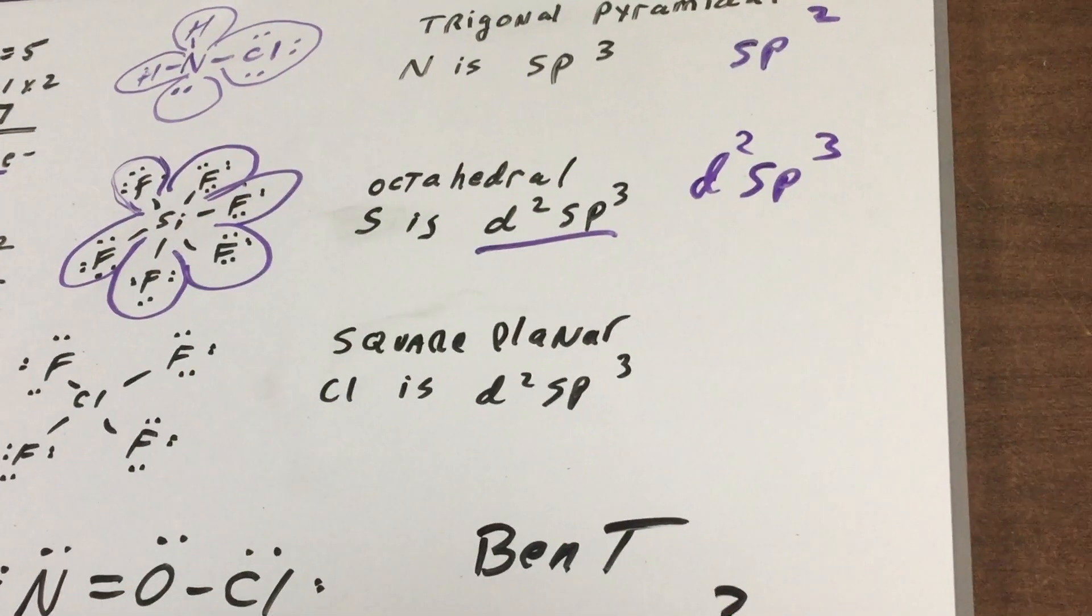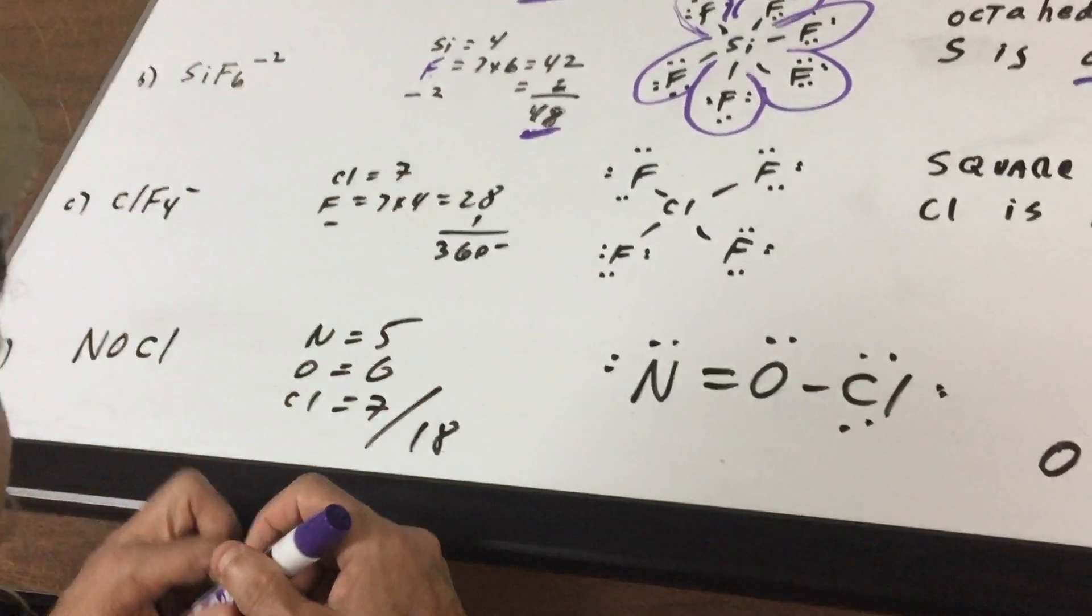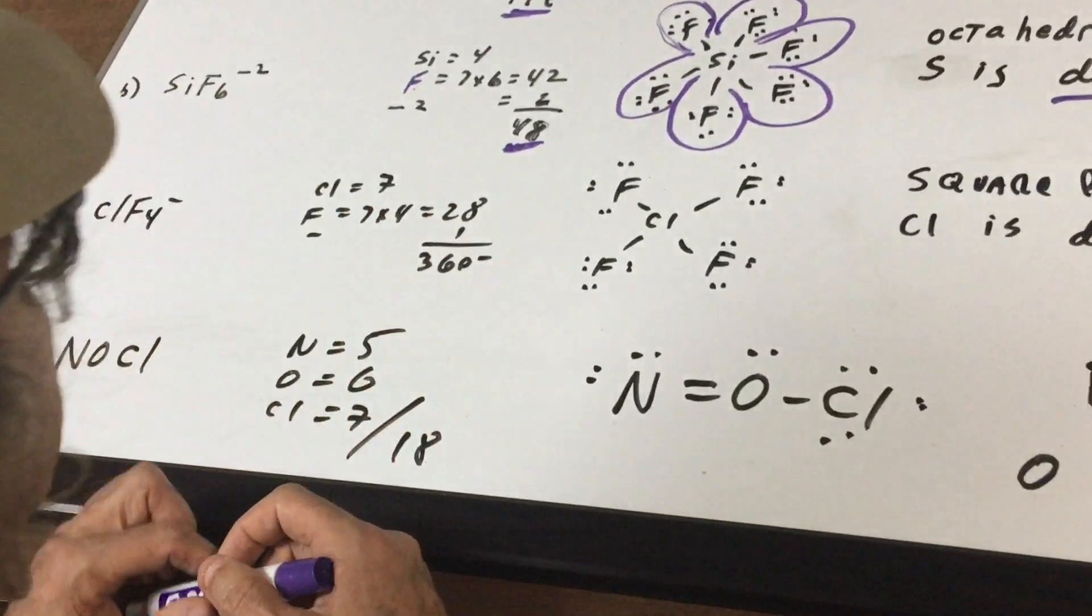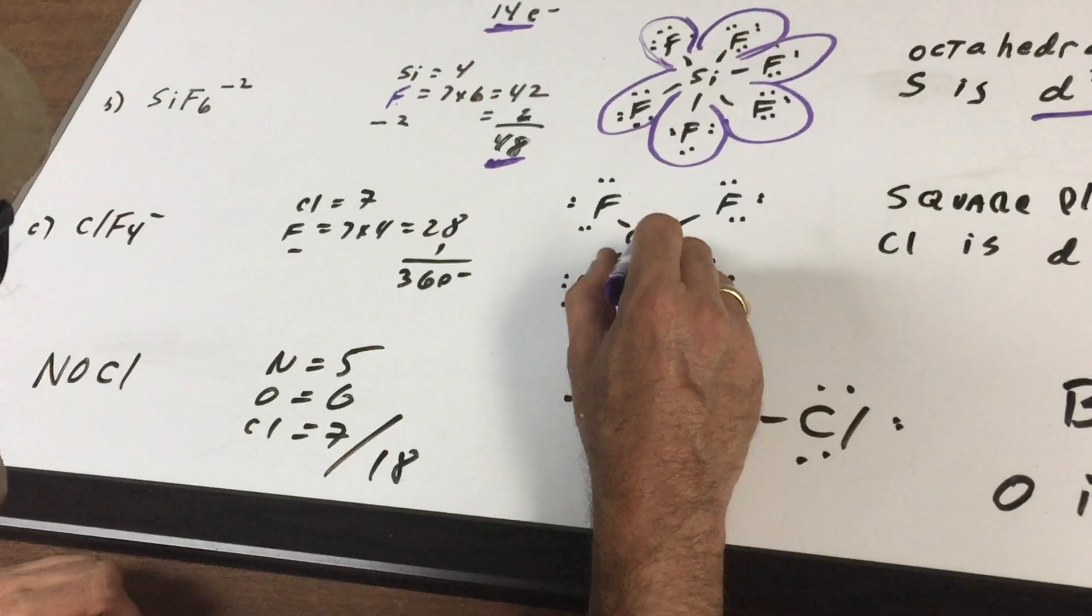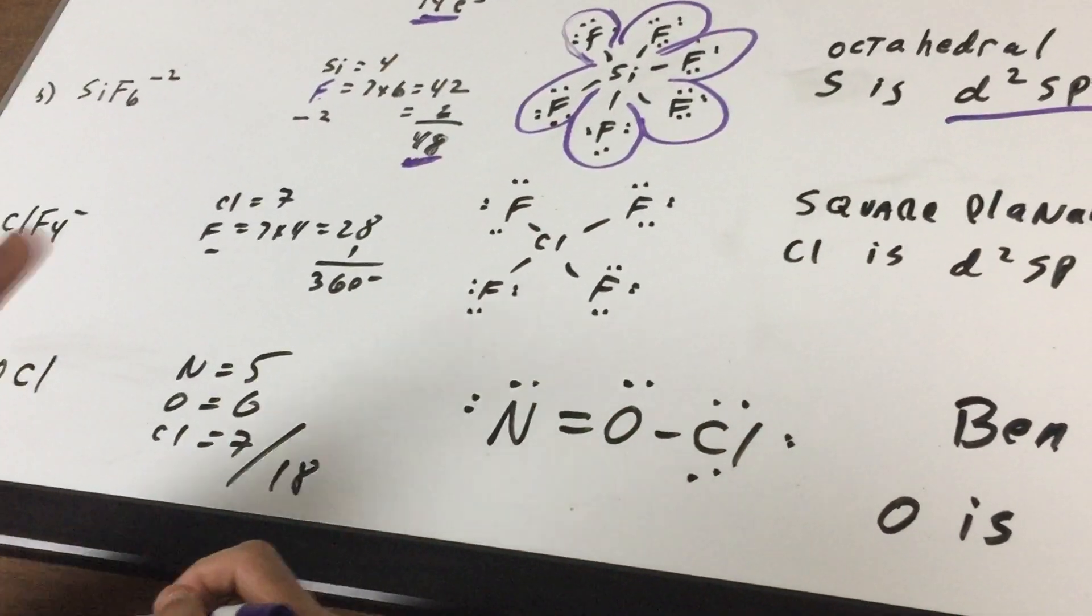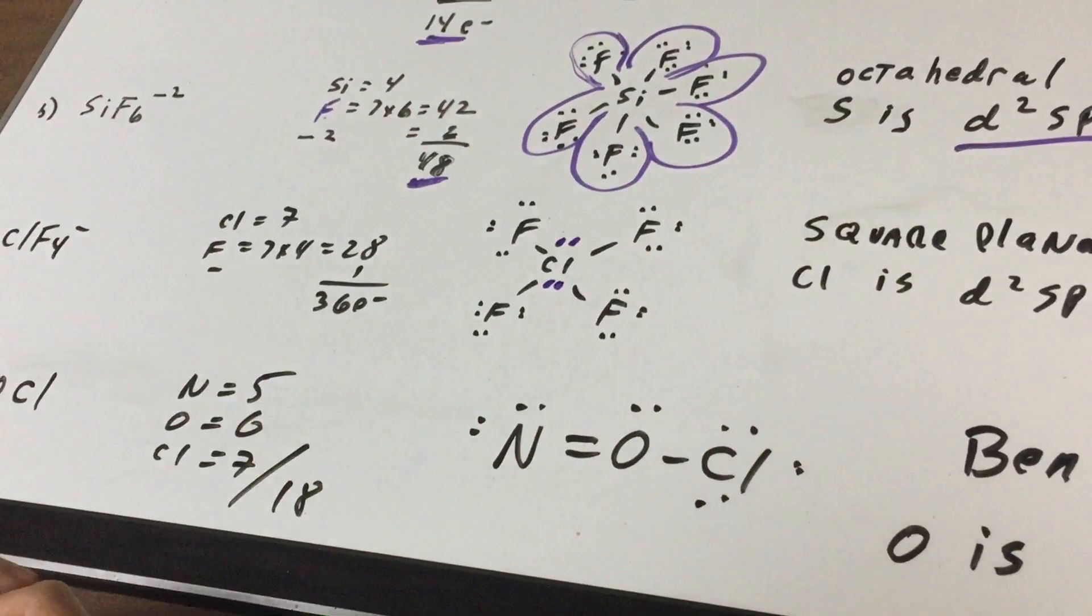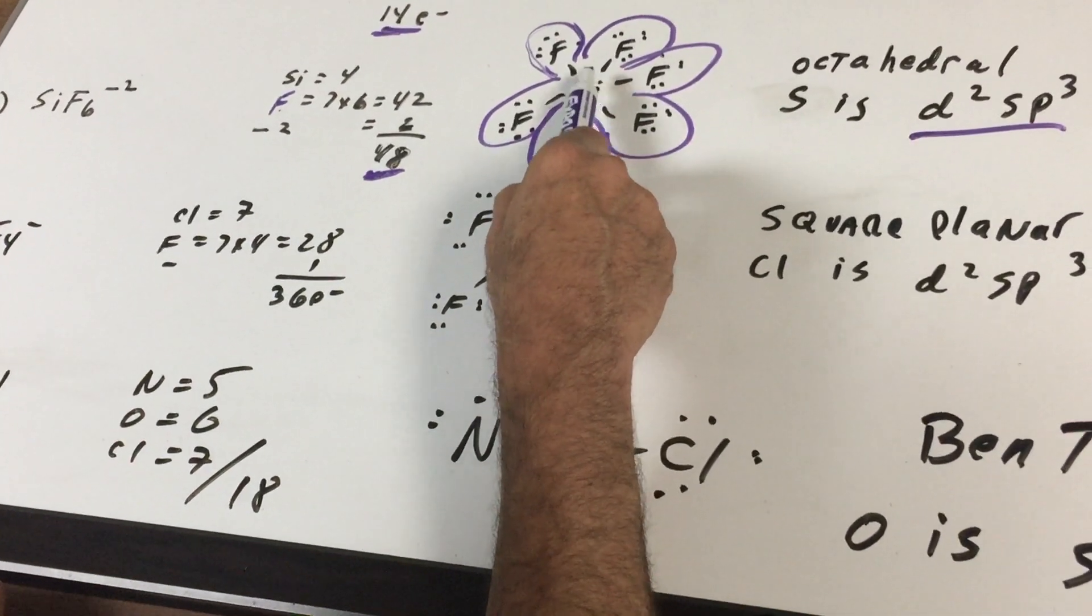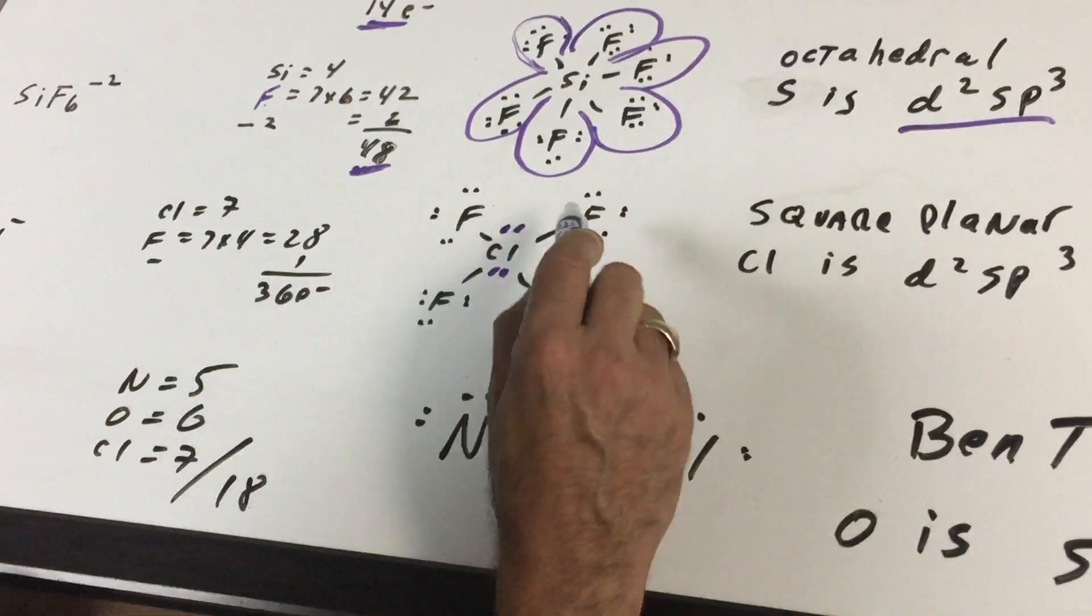Number three, let us see ClF4-. Cl is in group seven, fluorine is in group seven and there's four of them, that's 28. The minus sign gives you one. When we add them up we get 36 valence electrons. The chlorine goes in the middle, you put the fluorines to the outside, everybody gets eight. Eight, 16, 24, 32. But we need 36, so I'm going to put my two lone pairs on that central atom.